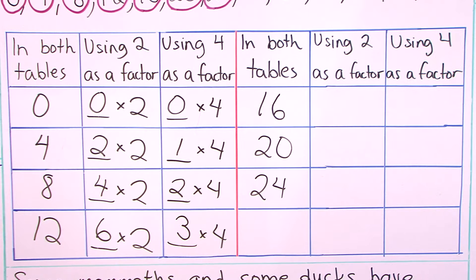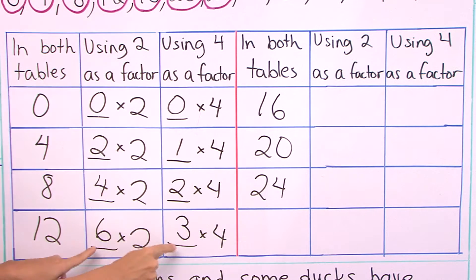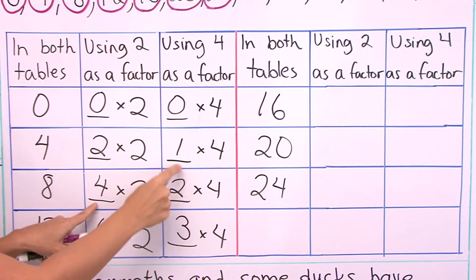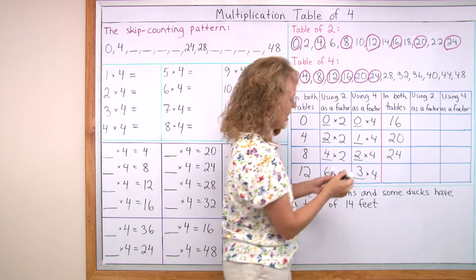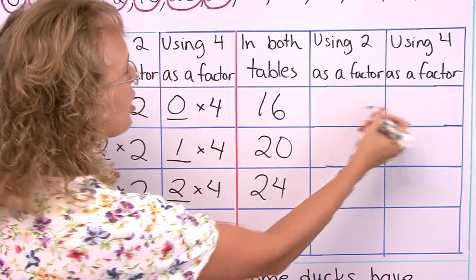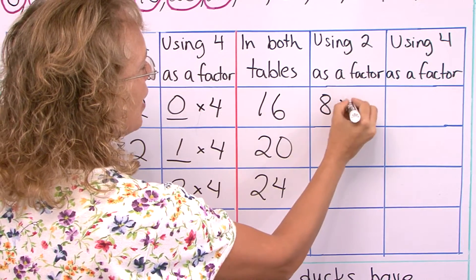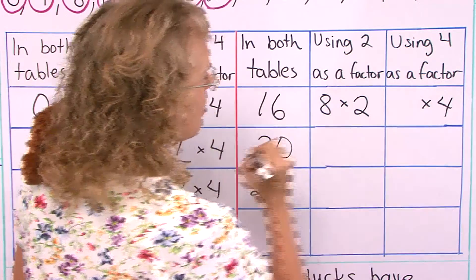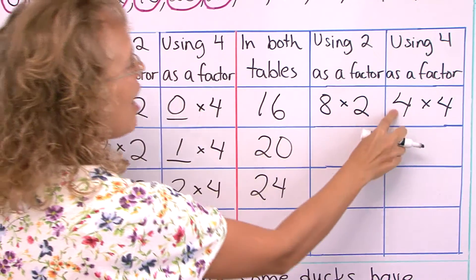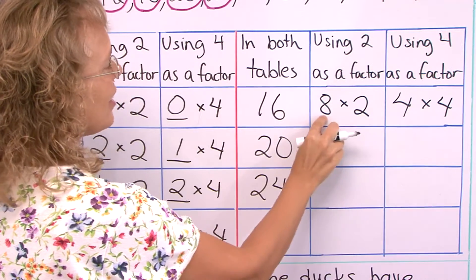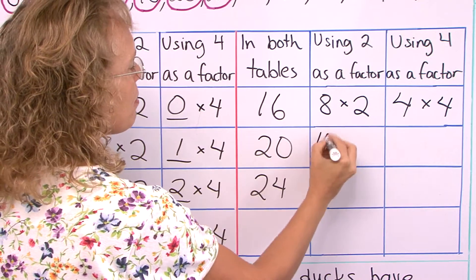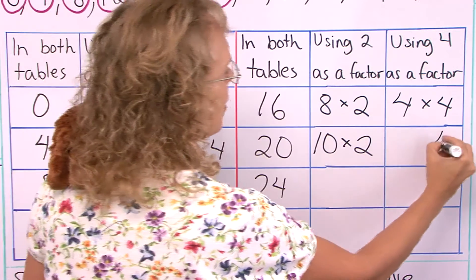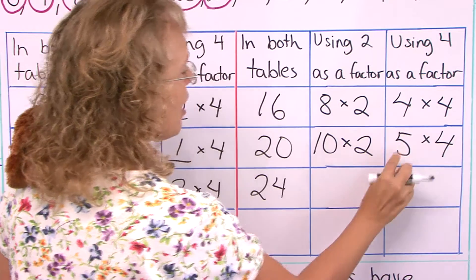There's a pattern in these numbers again: 2 and 4, 2 and 4, 2 and 4 each time. But these multipliers — 3 and 6, 2 and 4, 1 and 2 — again, this number here is a double of that number. And over here, 16 is how many times 2? 8 times 2. And how many times 4? 4 times 4. Half as many times here as there, so 8 and 4. And 20 is how many times 2? 10 times 2. And over here, half as many times — 5 times 4.